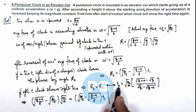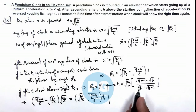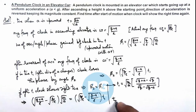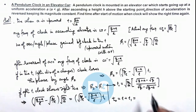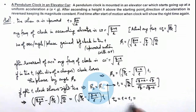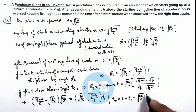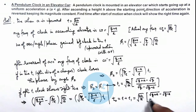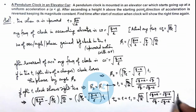This t₁ is the time after reversal of acceleration direction when the clock will show the right time. But we are required to find the total time after start of motion. So the total time T₀ equals t plus t₁, where t equals root(2h/ay). Simplifying, the final result is: T₀ = root(2h/ay) multiplied by [root(g+ay) − root(g−ay)] divided by [root(g) − root(g−ay)].